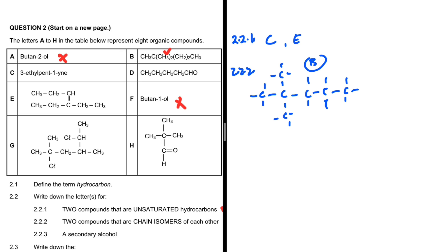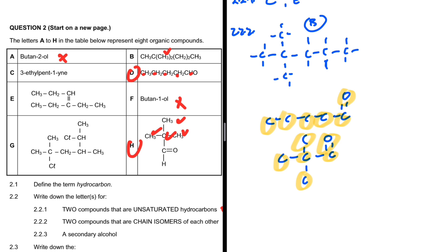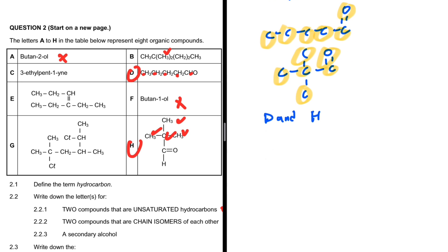Compound D has one-two-three-four-five carbons and a double bond to oxygen on the last carbon — that is an aldehyde. Compound H also has one-two-three-four-five carbons with two branches and a double bond to oxygen — also an aldehyde. So D and H are chain isomers: same molecular formula but different chains.